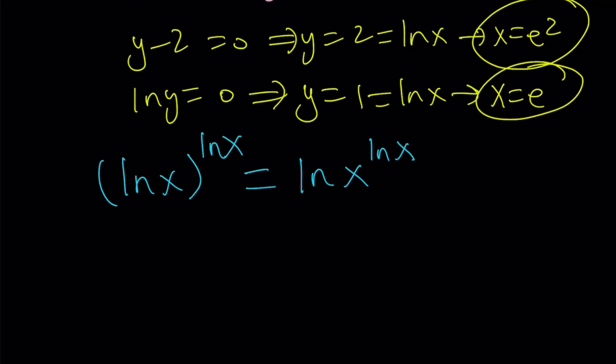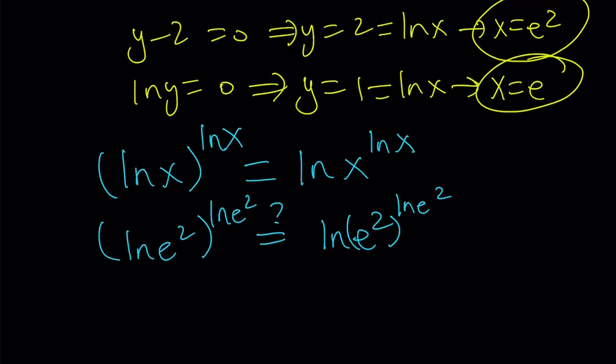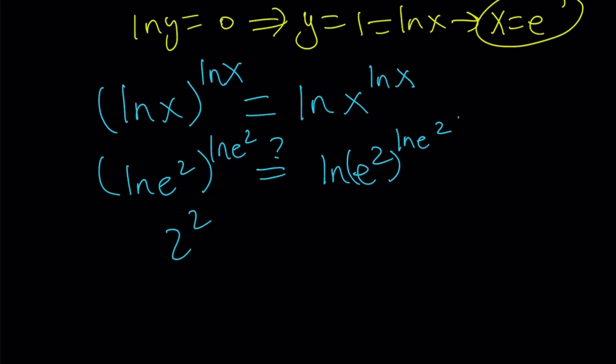Let's go ahead and plug in x equals e squared. So ln e squared to the power ln e squared. Does that equal ln e squared to the power, so in this case, you're kind of raising x to a power, so I will use parentheses and write this as ln e squared. Awesome. So now ln e squared is equal to two. So this is like two to the power of two, which is equal to four. And obviously, this is also two. So I'm going to move the two to the front, and that's going to be two times ln e squared, which is also two.